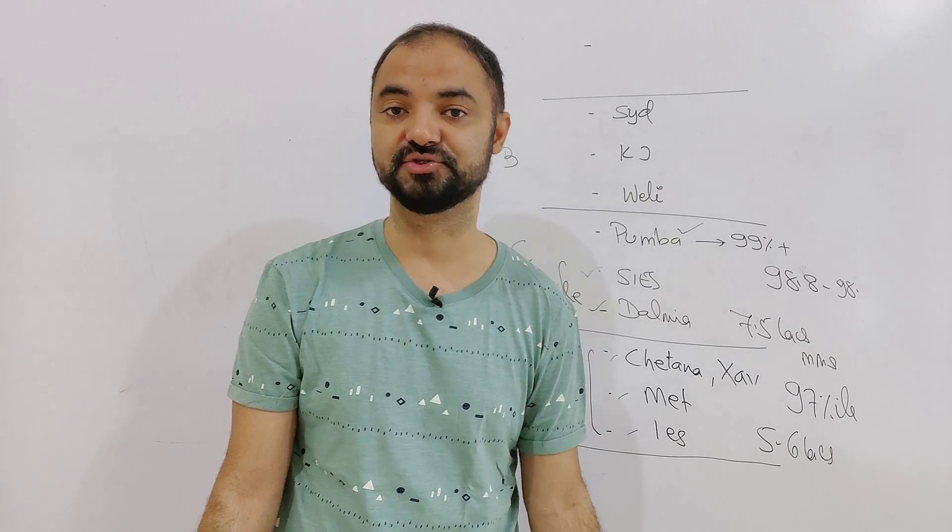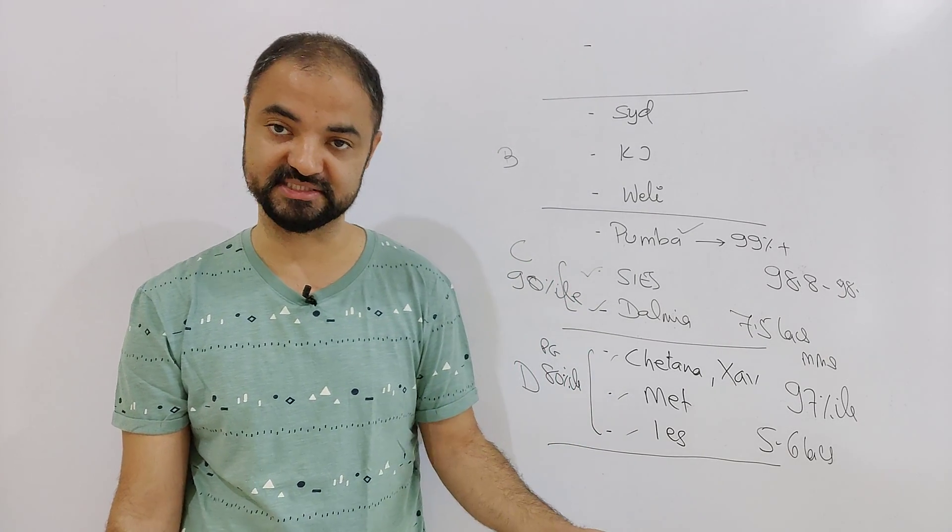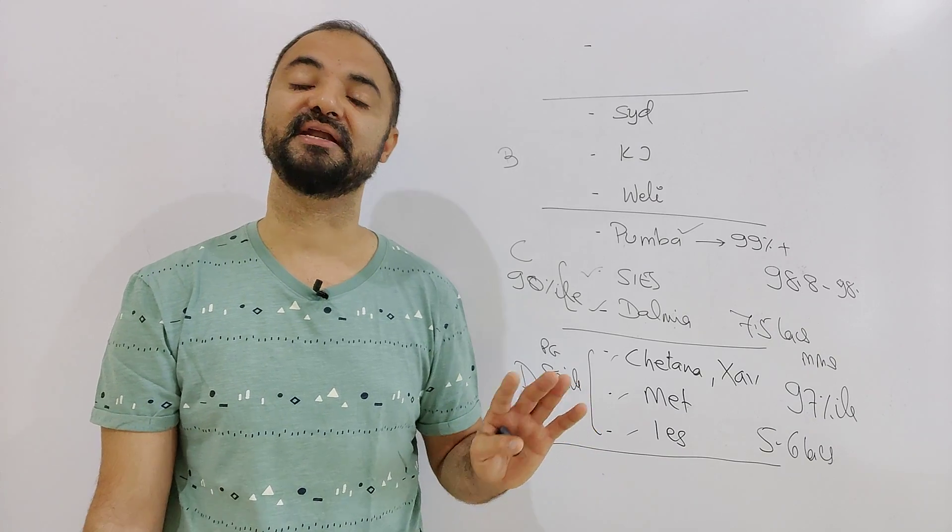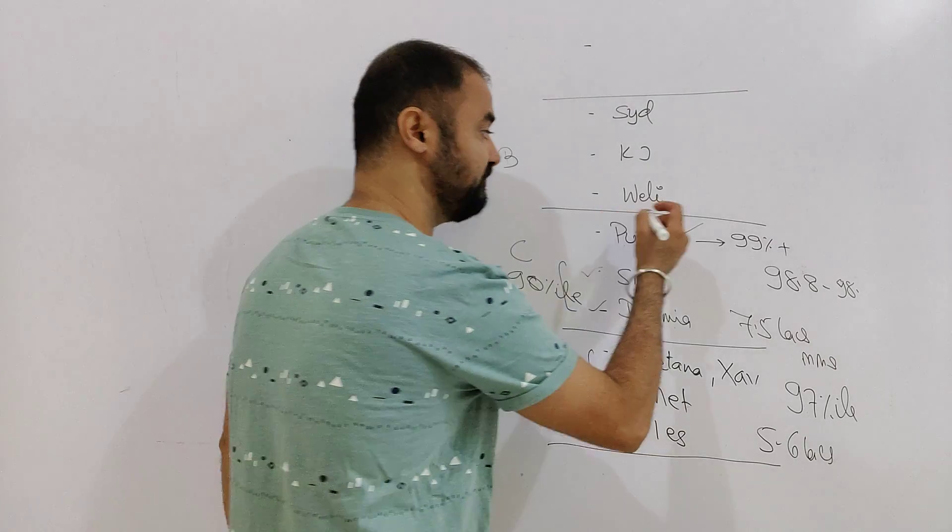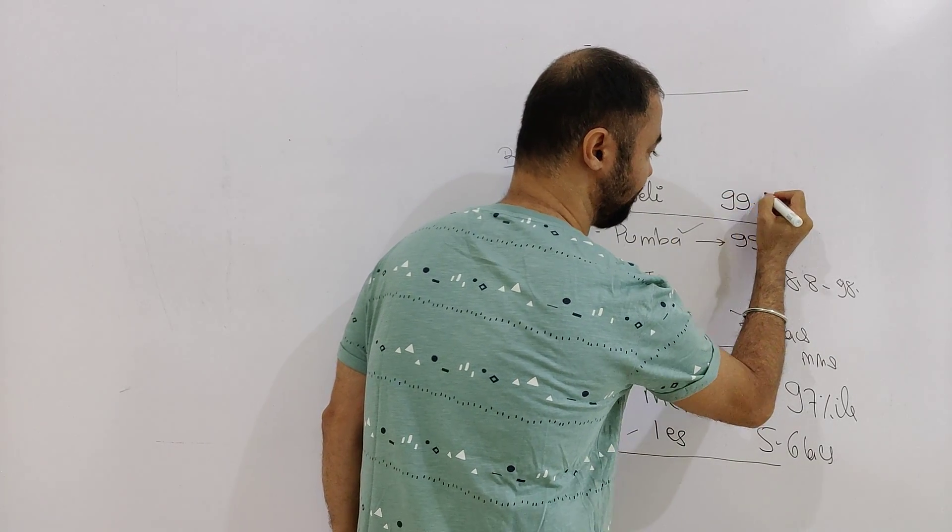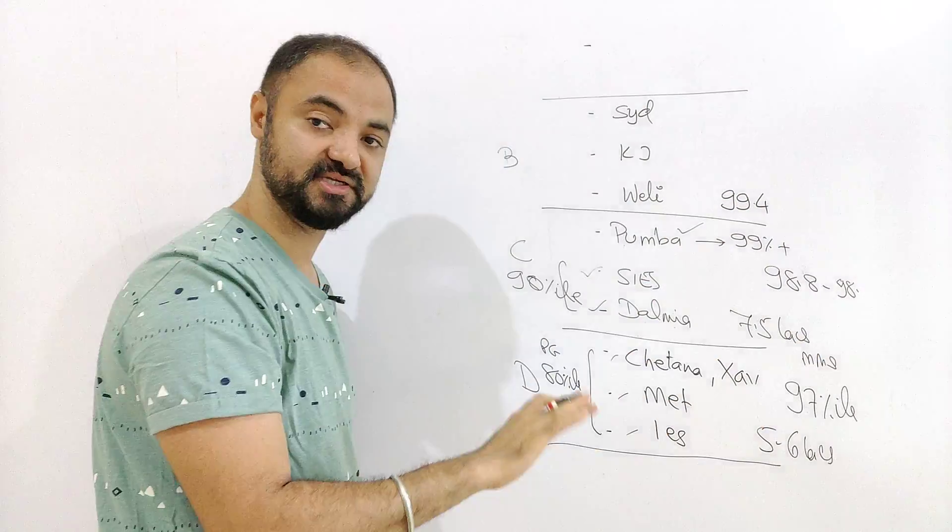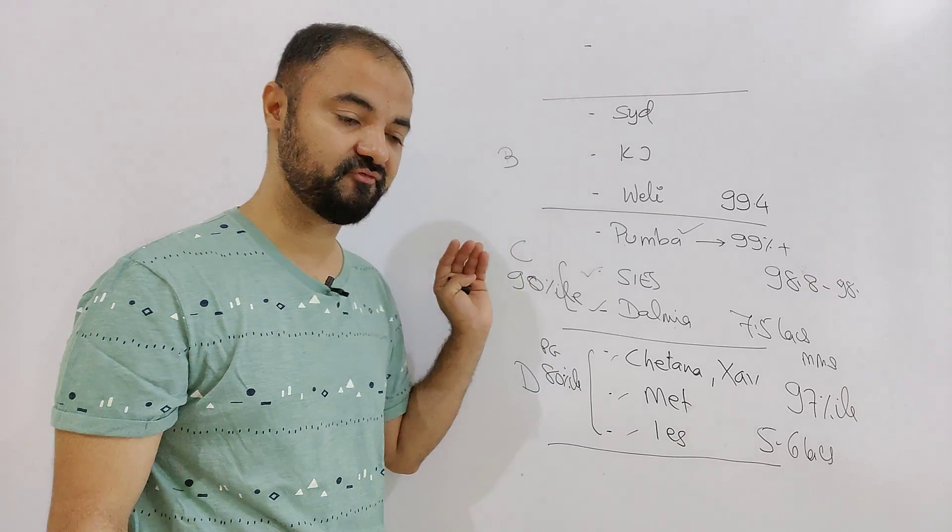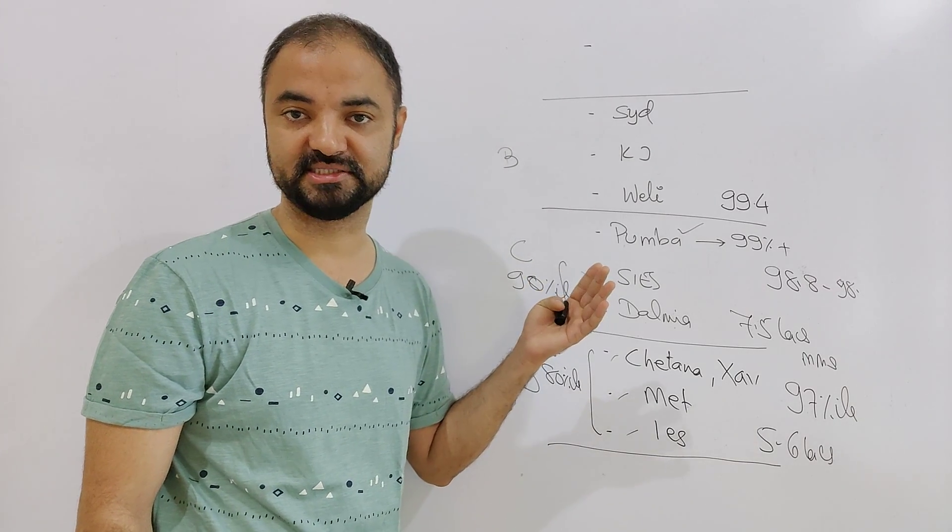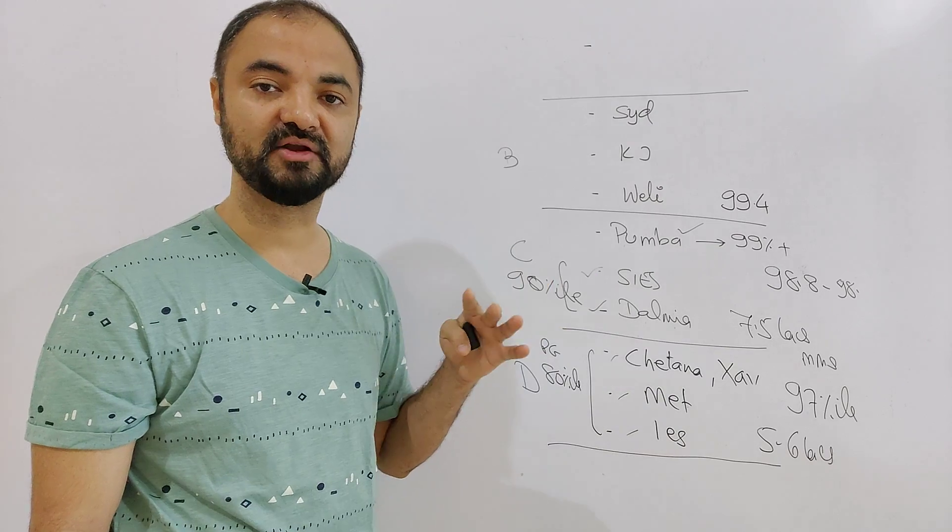See, Sydenham is obviously a better choice because of ROI, fees is very less. And number two, the intake is very less. Because of these two reasons, obviously Sydenham will remain number two. Cutoff wise, Welingkar this year will be around 99.4. I am talking about the last cutoffs, yeah, last round cutoffs. For example, Welingkar, first round will end at 99.6, 99.5. Then second round 99.4.